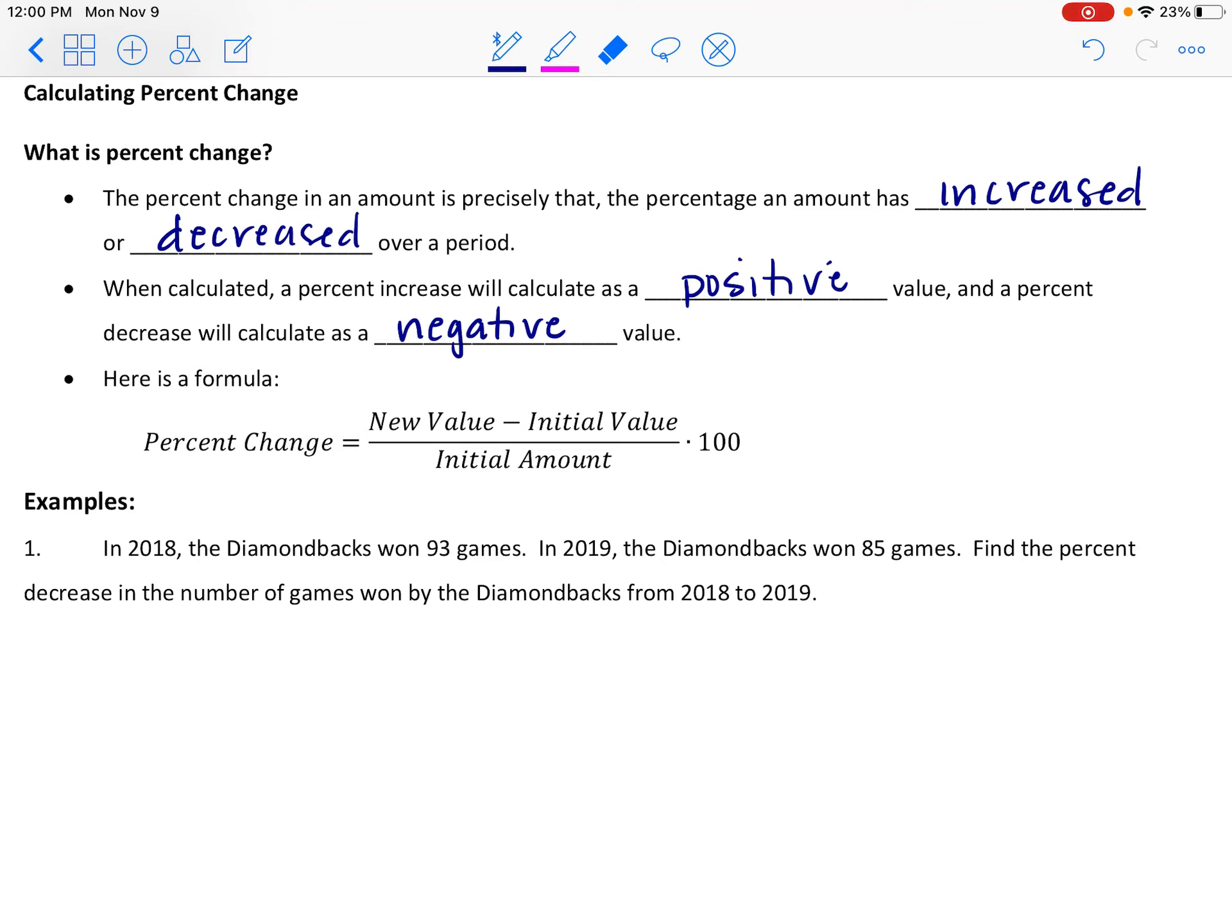What do we put in our fraction to calculate our percent change? You're going to have some initial value, some baseline, some starting amount or price of something. Then on the top of the fraction you take a newer value and subtract that initial value because that's going to give you the change. The bottom is the initial where we started, so we can figure out what's the percentage that we changed.